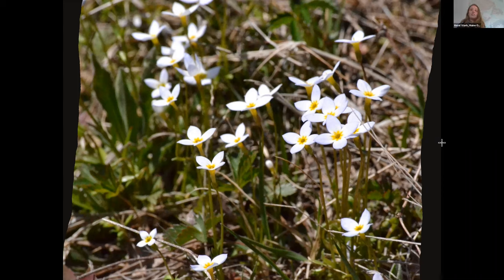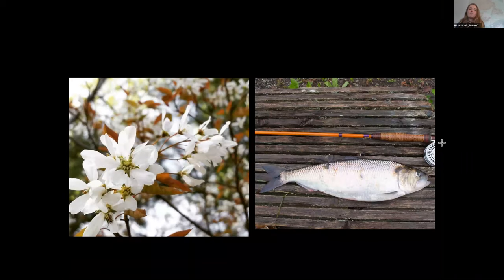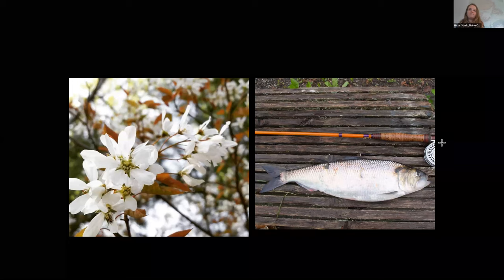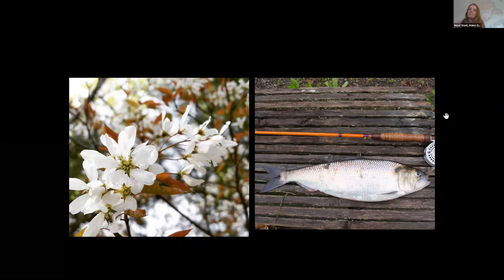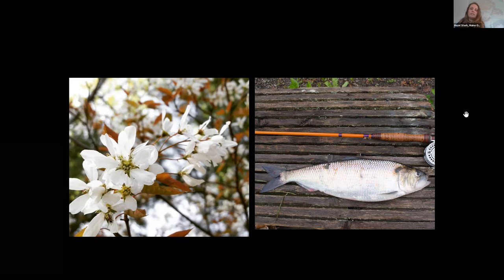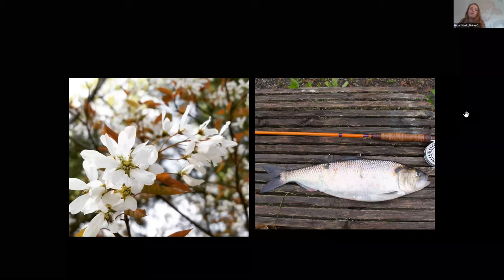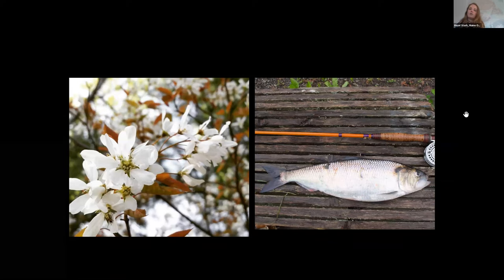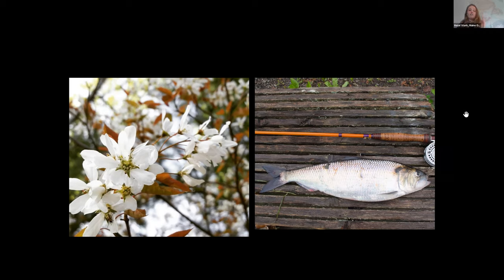This is one of my favorite phenology matches that happens. On the left is the flowering of shadbush — its other common names include juneberry or serviceberry, scientific genus Amelanchier — and on the right is the shad, a fish. When the shadbush is flowering, shad are running in rivers, so you know to go and fish for shad if you enjoy doing that. It'll be interesting to see if climate change influences either of those differently and if we experience some phenological mismatch, because right now they're still pretty matched in this area.